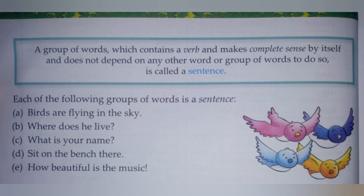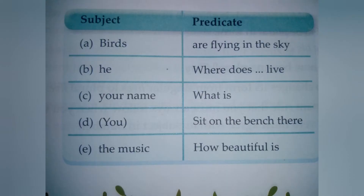There are four sentences: 'Birds are flying in the sky.' 'Where does he live?' 'What's your name?' 'Sit on the bench there.' 'How beautiful is the music?' These are sentences, and these sentences are made with the help of different words and verbs.